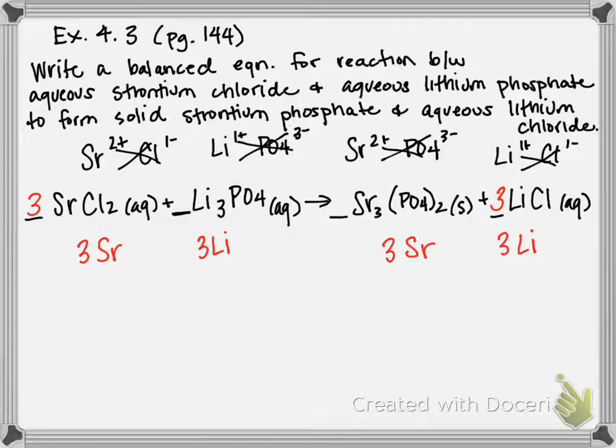Next, I'm going to move on to my anions. So first, I'm going to start with phosphate. When we're balancing polyatomic ions, you treat them as one single entity. So on my reactant side, I have one PO4 ion. On my product side,